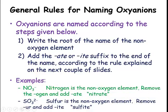For nitrate, nitrogen is the nonoxygen element. We remove the '-ogen' and add '-ate' to get nitrate. For sulfite, sulfur is the nonoxygen element. We remove '-er' and take the root 'sulf', then add '-ite' to get sulfite.